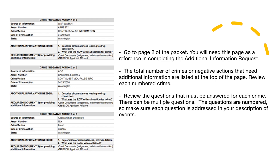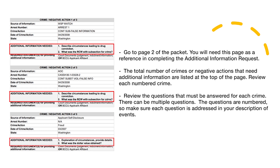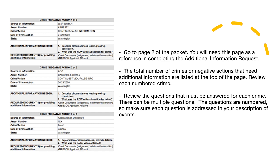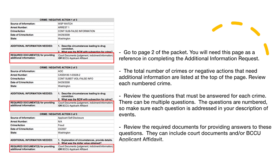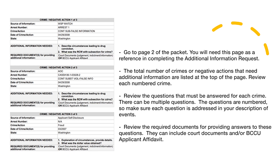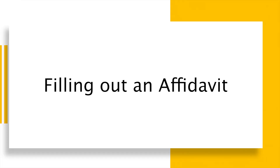Review the questions that must be answered for each crime. There can be multiple questions, and the questions are numbered, so make sure each question is addressed in your description of events. Review the required documents for providing answers to these questions. They can include court documents and/or a BCCU applicant affidavit.